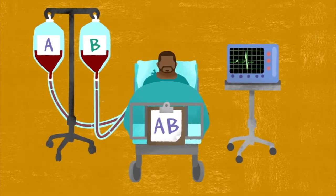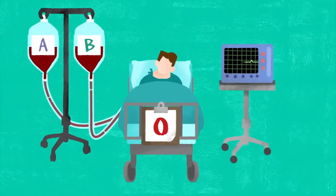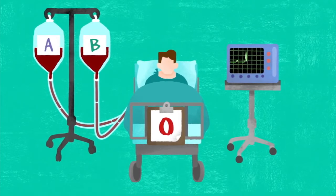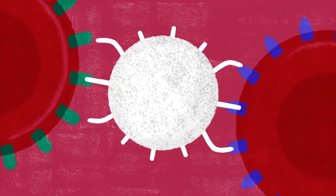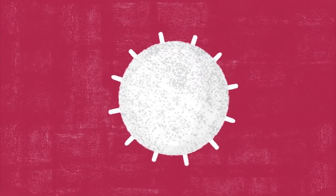On the other hand, people with blood type O do not produce either antigen, which makes them universal donors, but will cause their immune system to make antibodies that reject any other blood type.